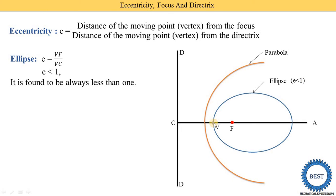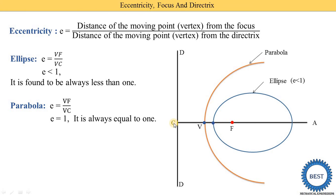For the parabola, V is the vertex (moving point) located for this conic. The eccentricity E = VF / VC — same definition. In the diagram, VF and VC look the same distance. If VF is 1 and VC is 1, then E = 1. If VF is 3 and VC is 3, then E = 1. So eccentricity for the parabola is always equal to 1.